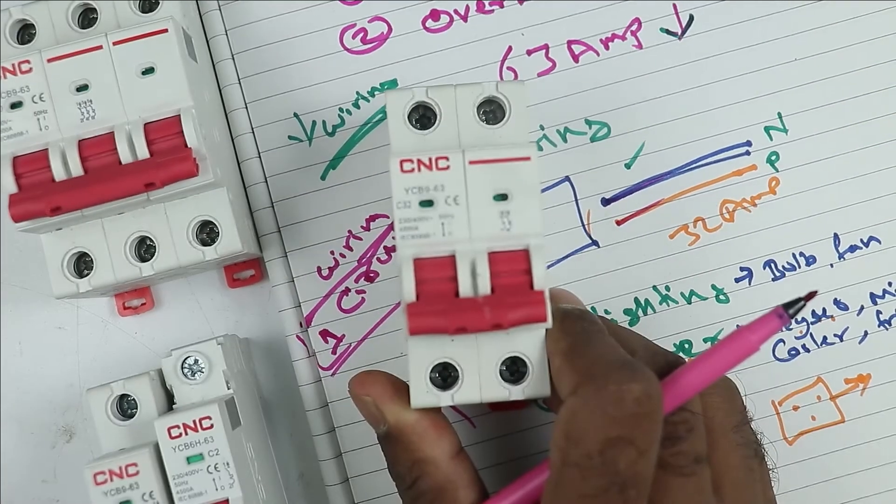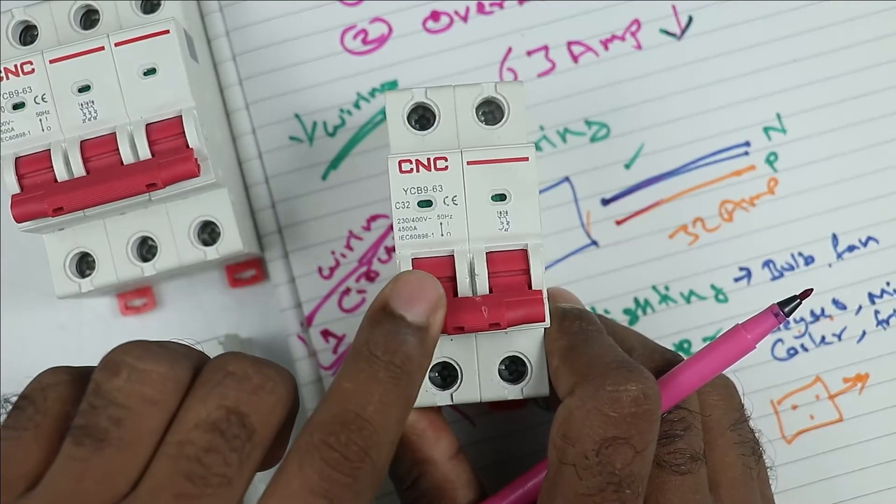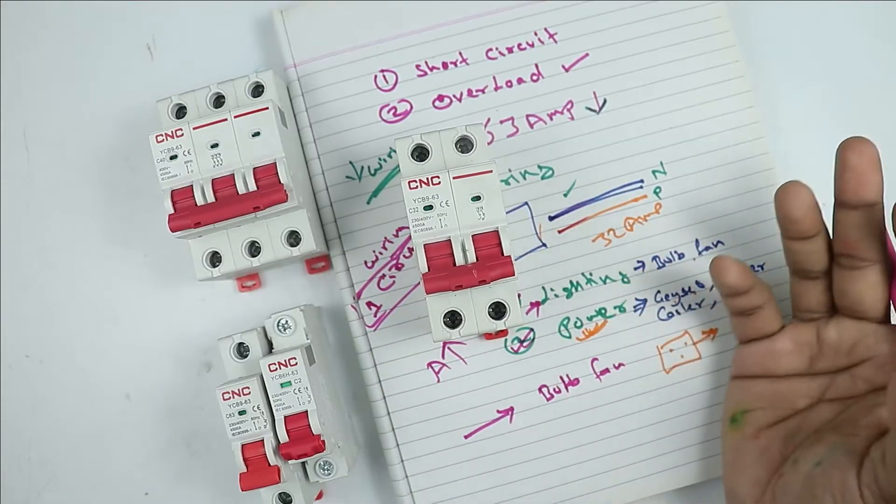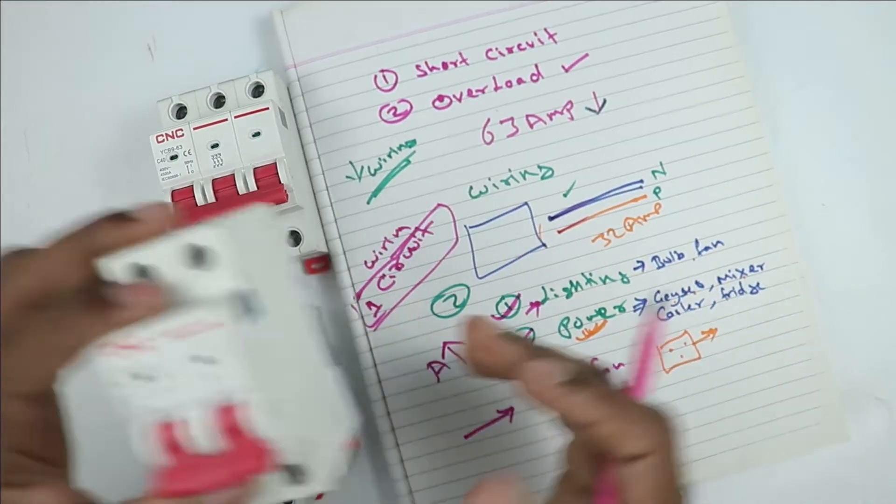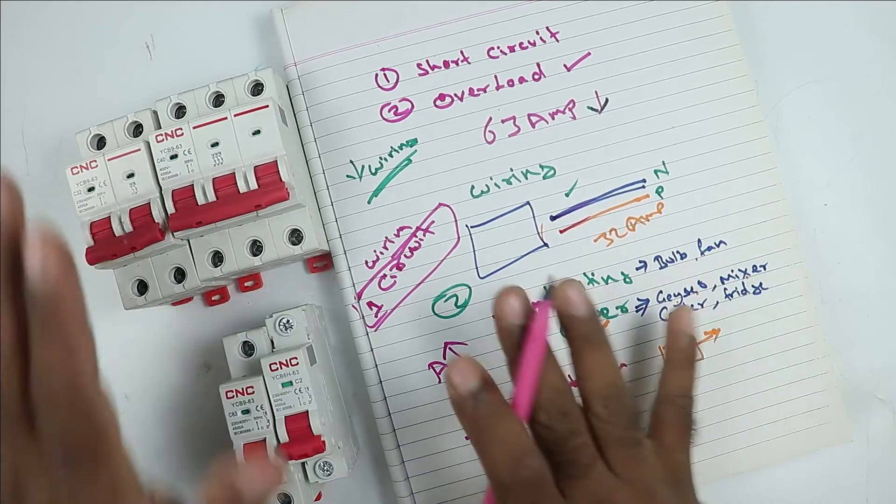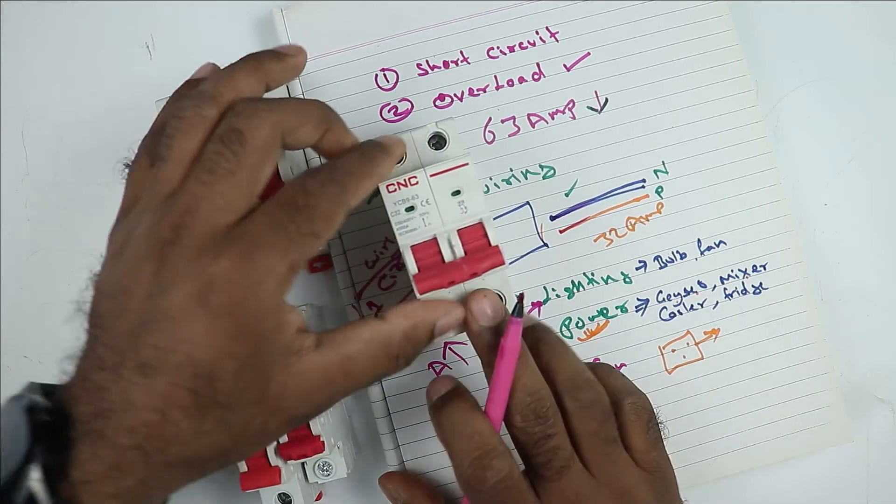You can see right now I also have 32 ampere MCB. So only this MCB is installed in their home. Now through this single MCB, if I run the whole load then this MCB will provide proper protection.